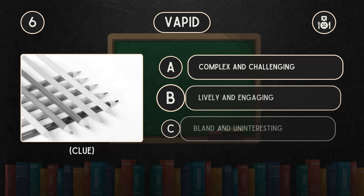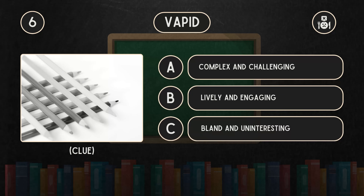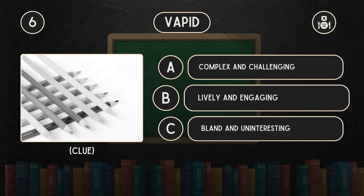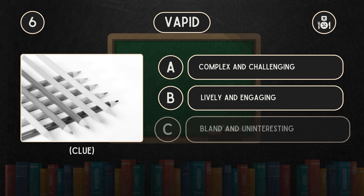What does vapid mean? Is it A: Complex and challenging. B: Lively and engaging. C: Bland and uninteresting.